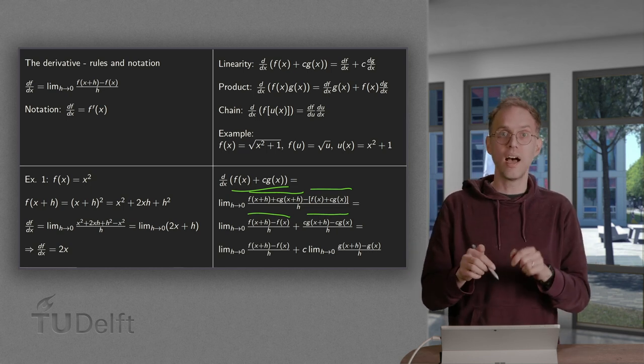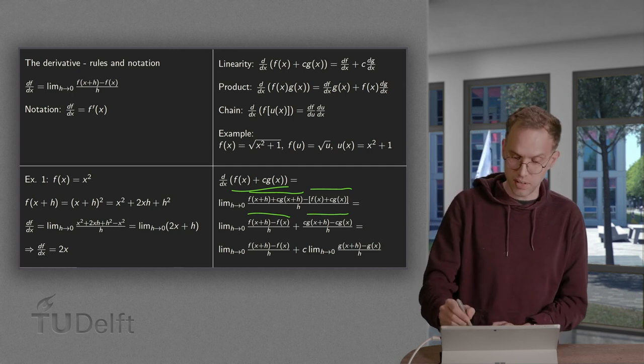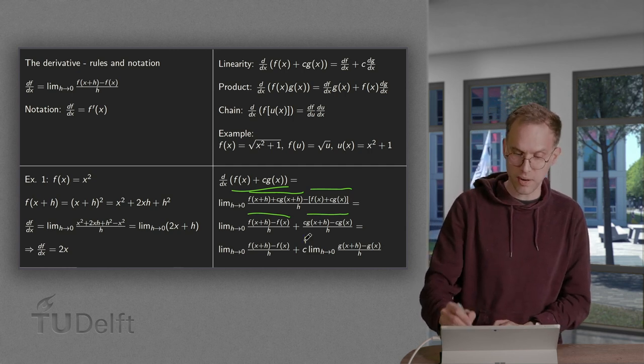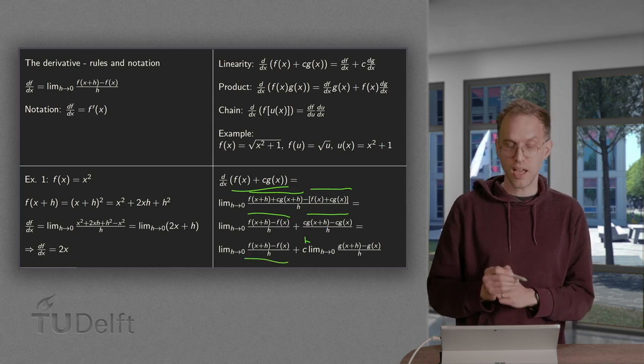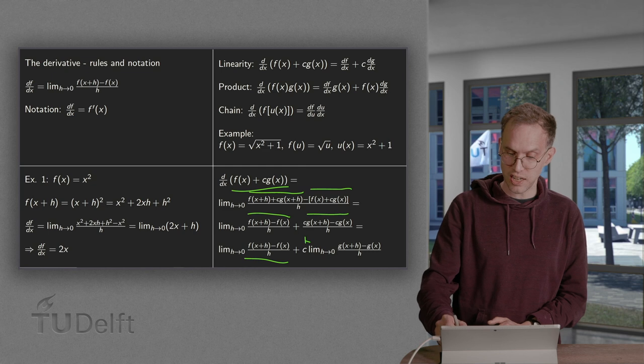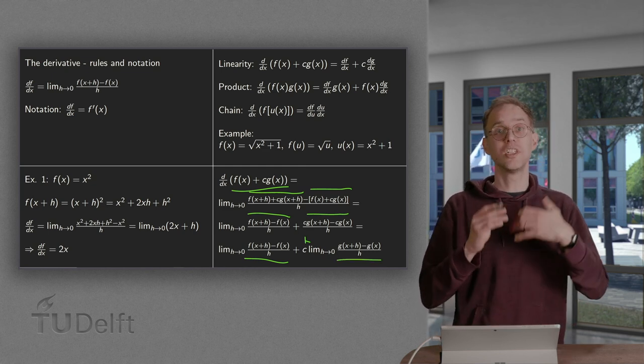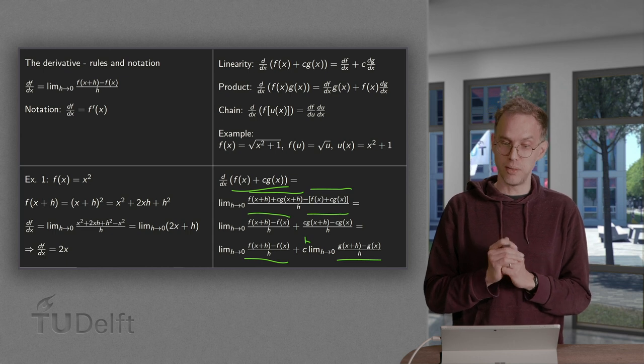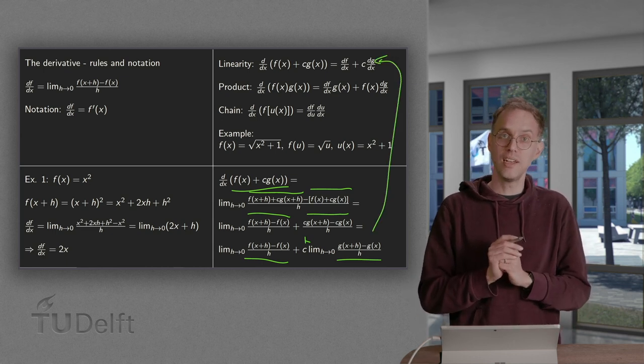And constant times limit equals the... This constant can be taken out. So what we get is f(x+h) - f(x) over h, and the second limit g(x+h) - g(x) over h, which is exactly f' + c times g'. And that proves the rule about linearity.